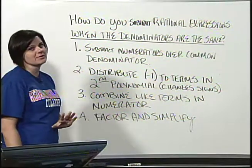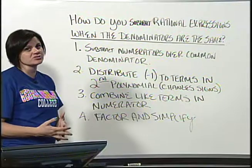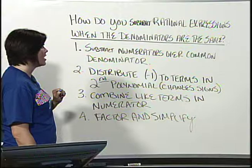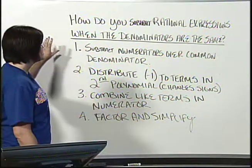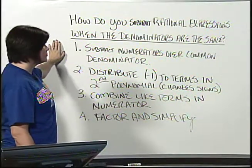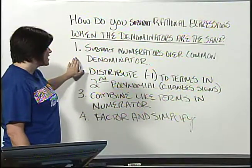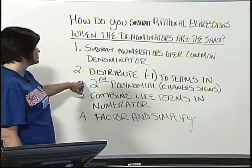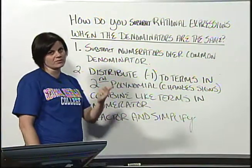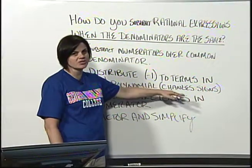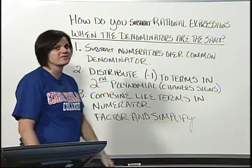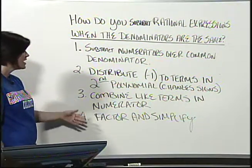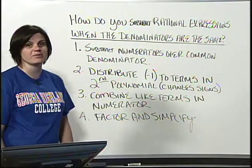Well, it's just about the same as when you're adding rational expressions with a common denominator, but there's a little bit of difference when it comes to subtracting a polynomial. Subtract the numerators over the common denominator first, and that's going to set up the situation where you're going to have a negative one that needs to be distributed to that second polynomial in the numerator, which is basically just changing the signs of the terms in that particular polynomial. Then you're going to combine like terms in the numerator and finish it off by factoring and simplifying.